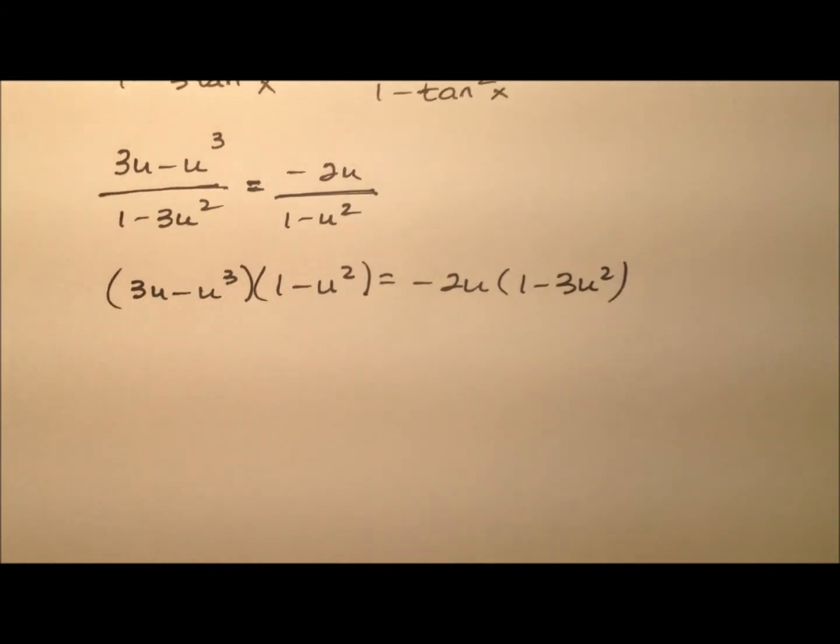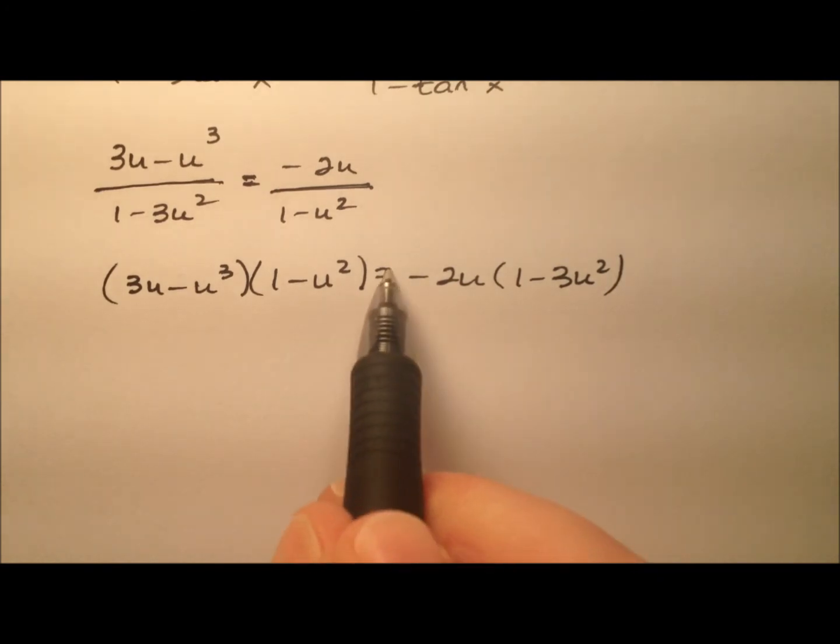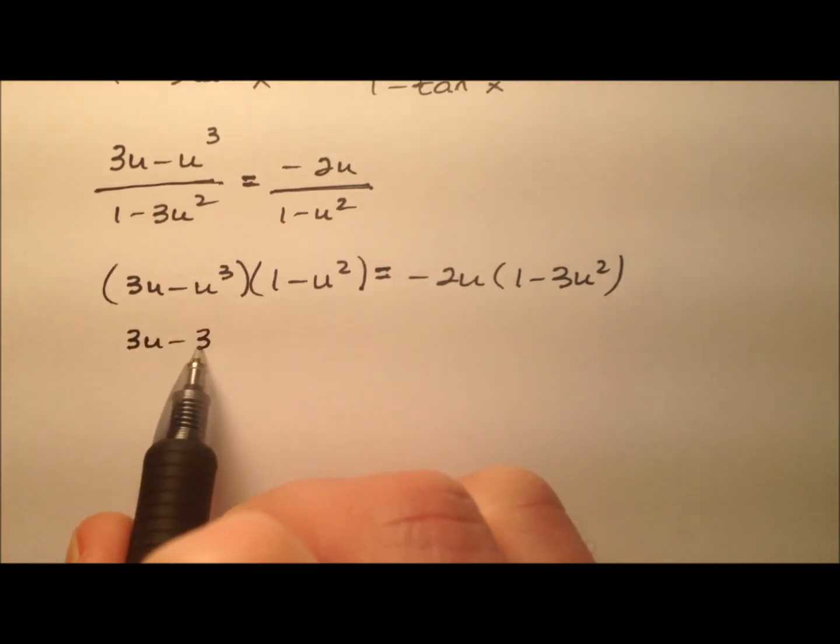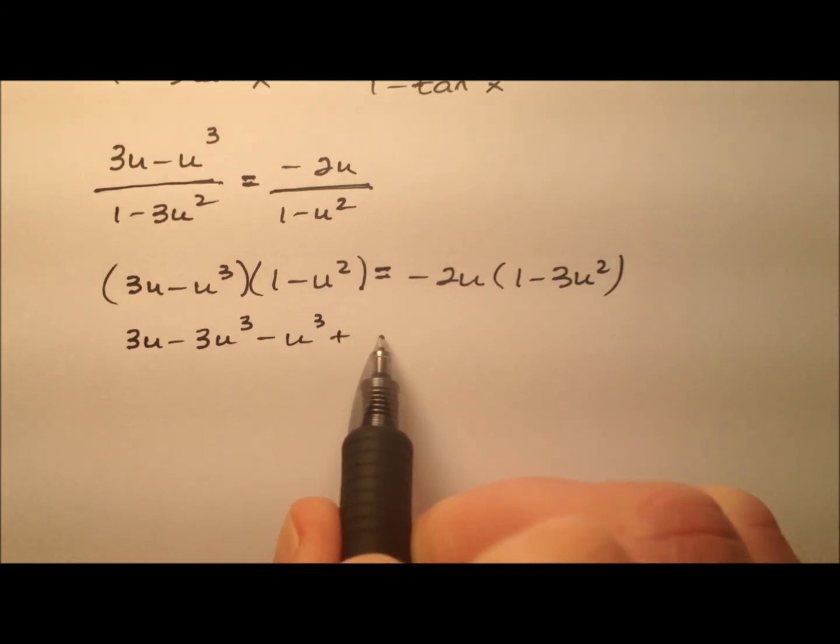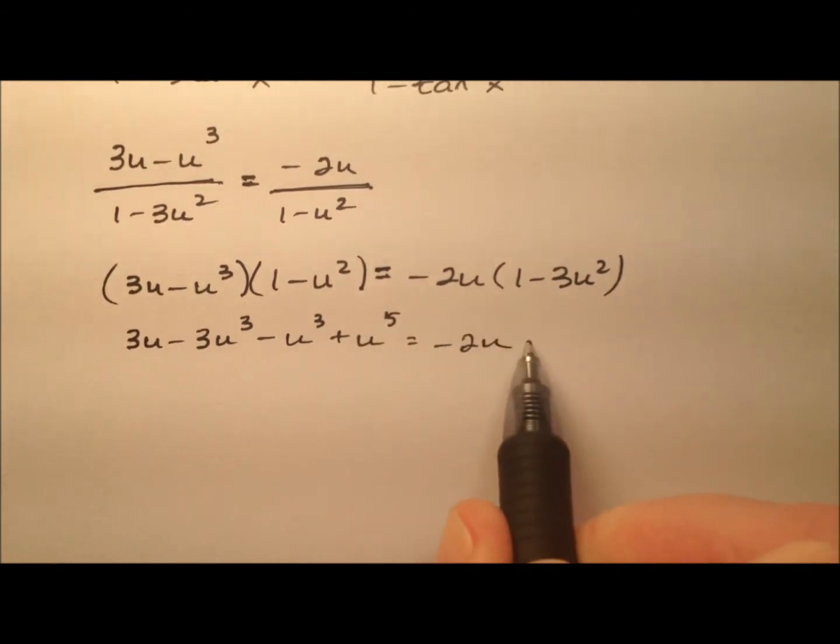Okay, so this is probably going to be the most algebra heavy portion. We just need to multiply all this stuff out and get it on one side of the equation equal to 0. So let's do that. So 3u minus 3u cubed minus another u cubed plus u to the fifth equals negative 2u plus 6u cubed.